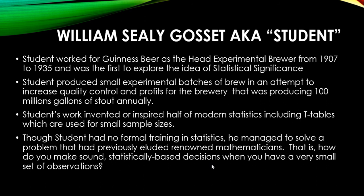He was doing this specifically to improve the beer at the Guinness company. This is probably why he didn't use his own name — I've read that he used 'Student' because he didn't want people to know what he was doing and duplicate it, so it was industry competition. Student's work invented or inspired half of modern statistics, including the t-tables, which are used for small sample sizes. Student did not have any formal training in statistics — he was self-taught — but he still managed to solve a problem that had previously eluded renowned mathematicians.